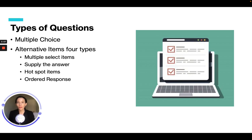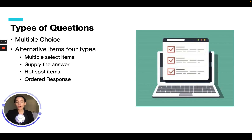Let's go over the types of questions you will see on the exam. You're going to have your basic multiple choice question where you have a question and four or five answers and you choose the correct one. You will also have alternative items. There are four types: multiple select items, also known as select all that apply; supply the answer questions, where you fill in a blank box; hotspot items, where you click on a specific area; and ordered response questions. Let's go over those.